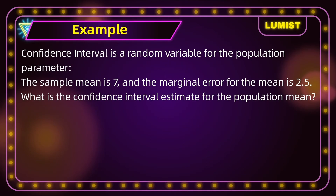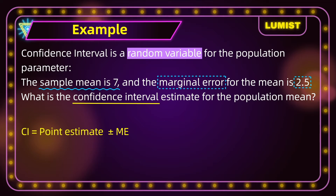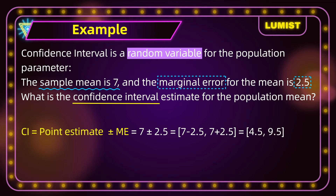For example, suppose we have a confidence interval for a population parameter where the sample mean is 7 and the margin of error is 2.5, and we want to find the confidence interval estimate for the population mean. We know the confidence interval equals the point estimate plus or minus the margin of error. So the lower bound is 7 minus 2.5 and the upper bound is 7 plus 2.5. When we calculate this we get 4.5 to 9.5. This is our confidence interval.